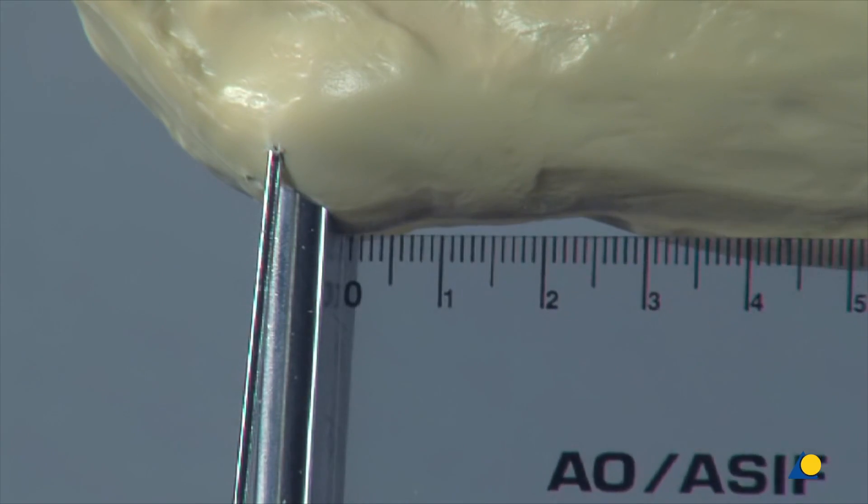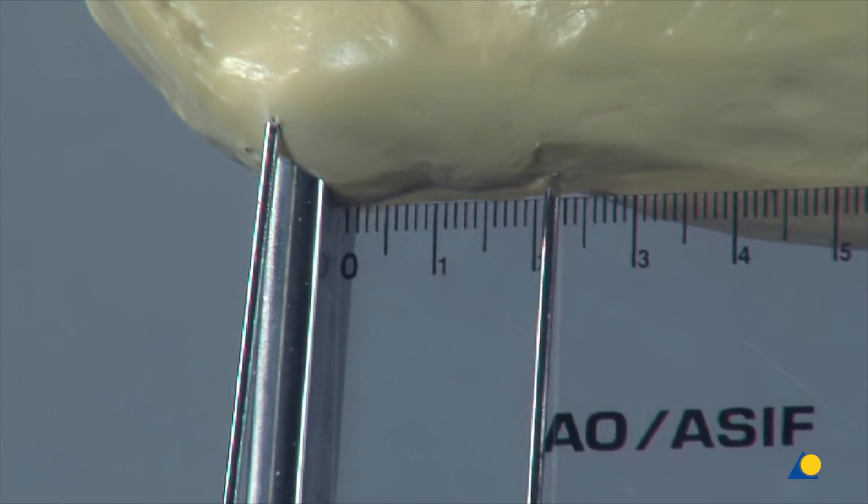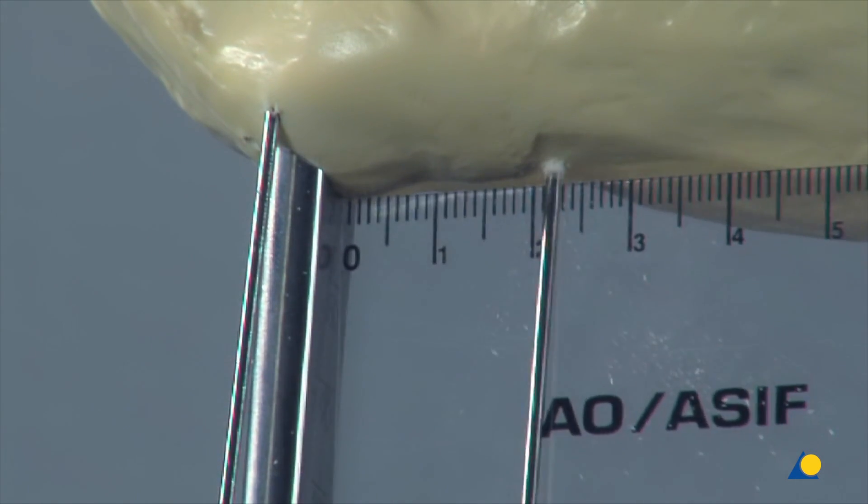A K-wire is inserted 2 centimetres below the position of the seating chisel. This will be the plane of the proximal osteotomy cut.